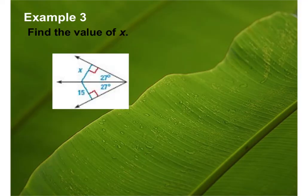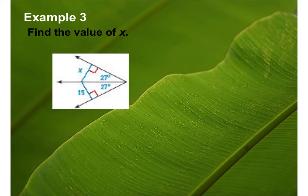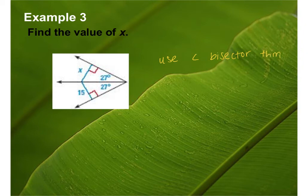Example three: find the value of x. Which theorem are we using — the regular angle bisector theorem or the converse? Regular, because they give you the angle — it tells us both angles are 27 degrees. If we know it's an angle bisector, that's just the regular angle bisector theorem. So those two line segments must be congruent, meaning x has to be 15.